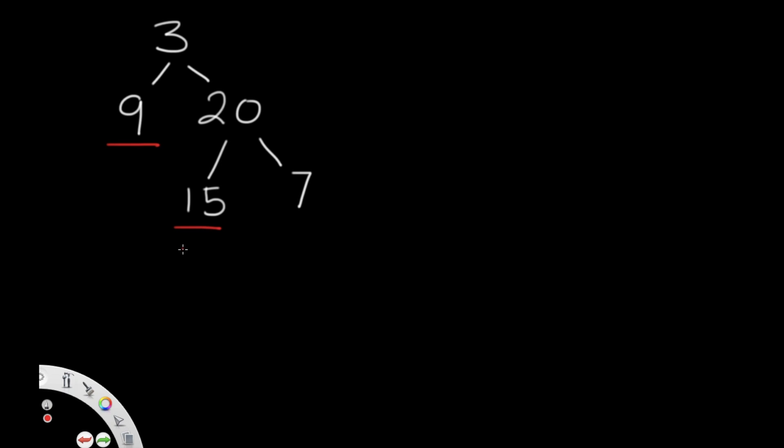Going back to the example, we have the tree 3, 9, 20, 15, and 7. The leaves are basically the endings of our binary tree, so in this case our leaves are 9, 15, and 7. But we only want the left leaves, so that's going to be 9 and 15. We add 9 and 15 and we get 24.